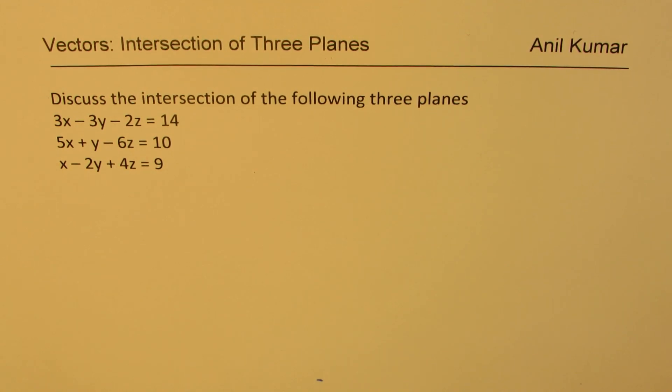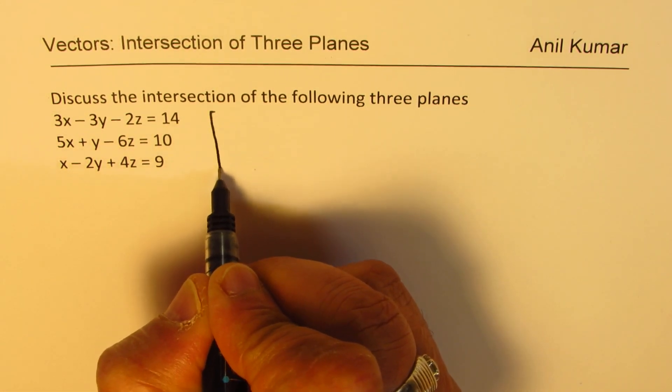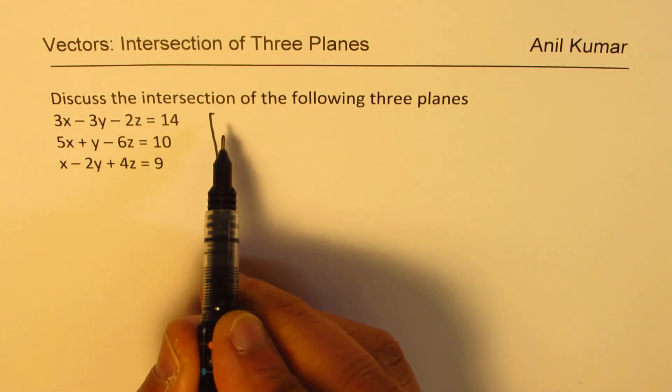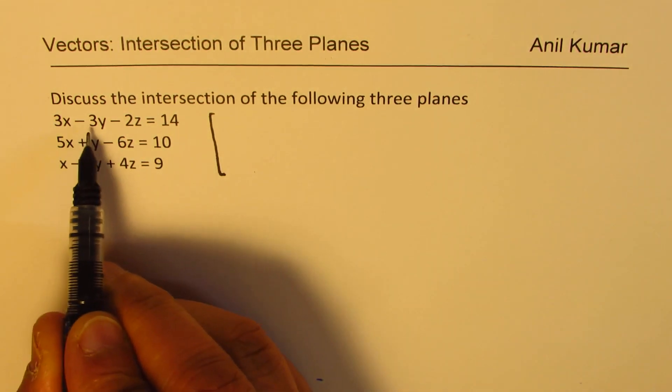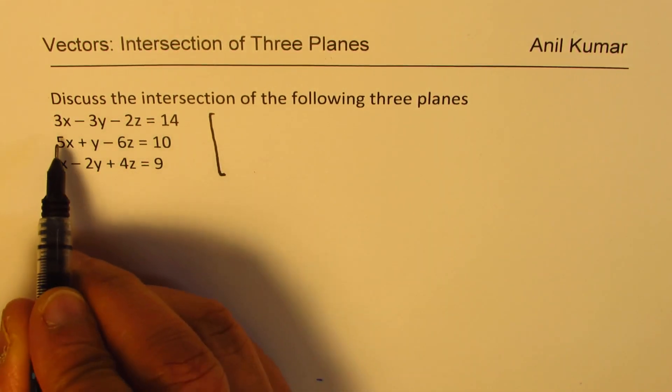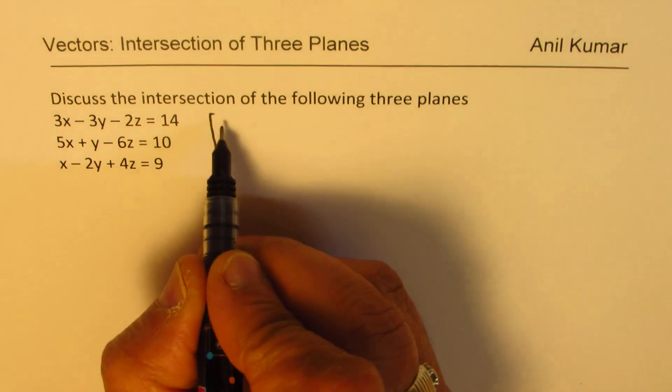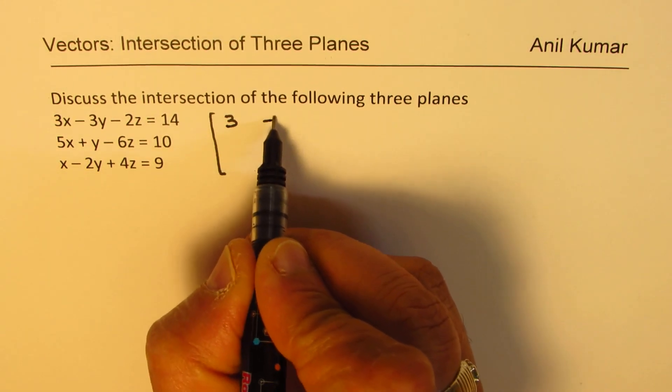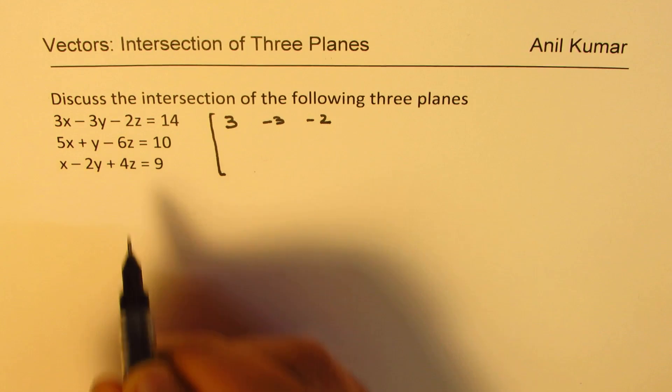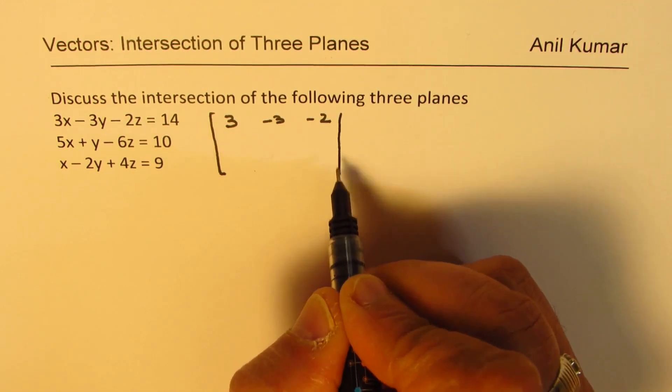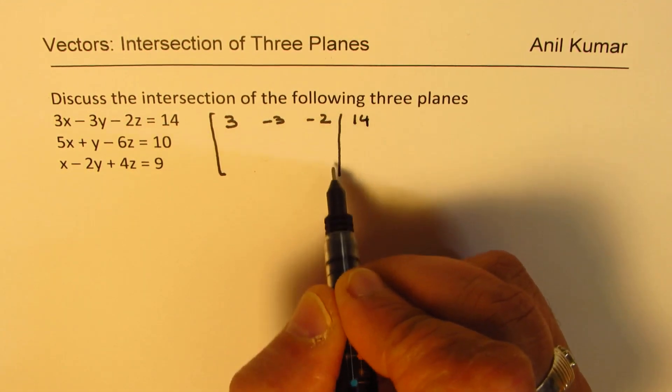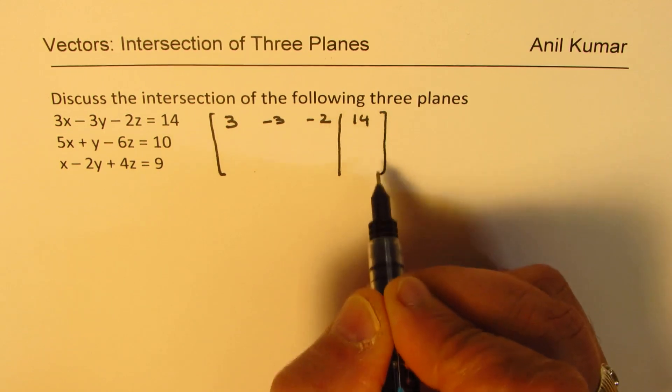We will adopt the method of matrices to solve this particular system of equations. Let's begin by writing the augmented matrix. In augmented matrix we only deal with the coefficients. The first equation coefficients are 3, minus 3, minus 2. The values after the equal sign are written after a vertical line.